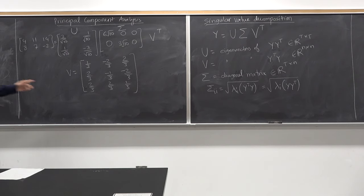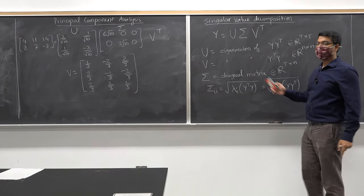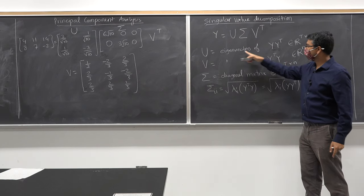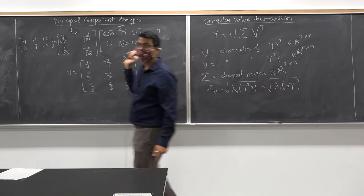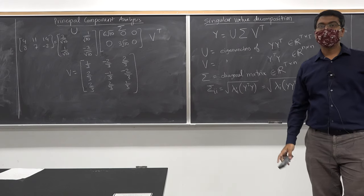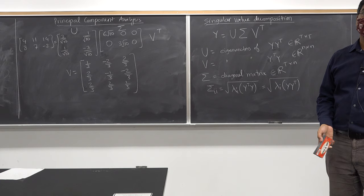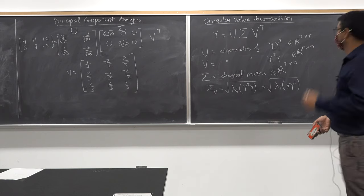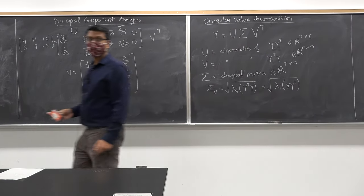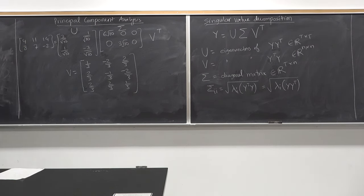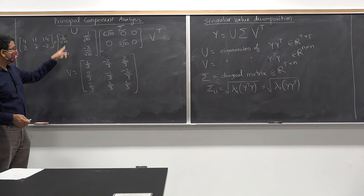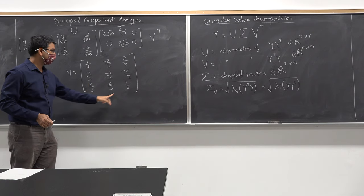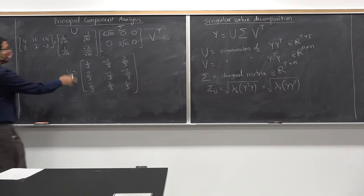U is not positive semi-definite — U is the eigenvectors of YYᵀ, which is a symmetric matrix, so the eigenvectors must be orthogonal to each other. YYᵀ is positive semi-definite. You will also notice that U is a unitary matrix, meaning each column has norm equal to one — they are all unit vectors.